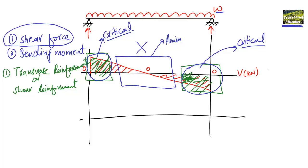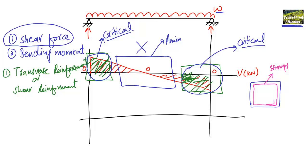The shear reinforcement looks like this in a beam cross-section — it is a stirrup. These stirrups are also called lateral reinforcement, shear reinforcement, or ties in columns. These stirrup reinforcements are used for shear design.